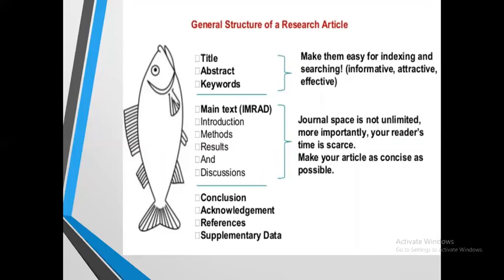The next is the keyword. Keywords are the main or vital words available in the abstract. After the abstract, we generally give three, four, or five keywords. For example, if you have done an experimental analysis using two different machines and developed a new material, you can give keywords such as the new material name and the equipment names — the most significant words used in the abstract are termed keywords.